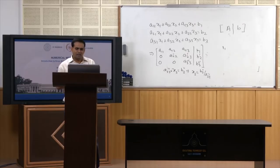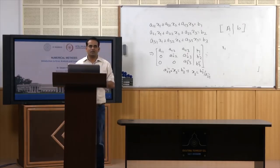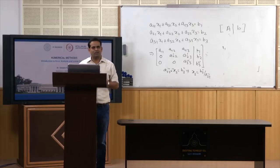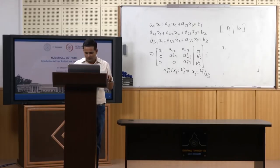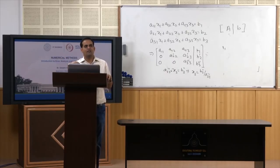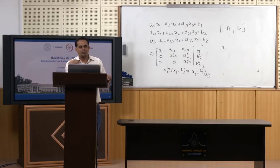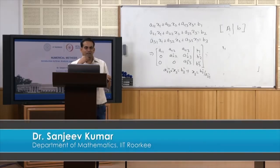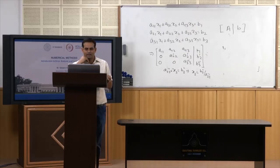This error can be overcome using Gaussian elimination with partial pivoting, which I will introduce in the next lecture. In this lecture I told you about errors in numerical computations, the types of errors we encounter, and the concept of significant digits. I gave examples in which we lose significant digits in further computations, and finally introduced Gaussian elimination. Thank you very much.